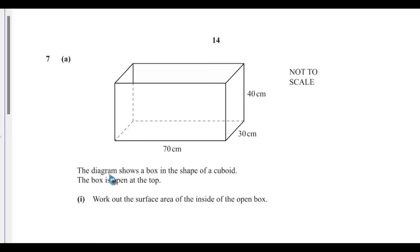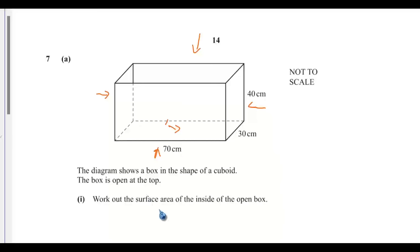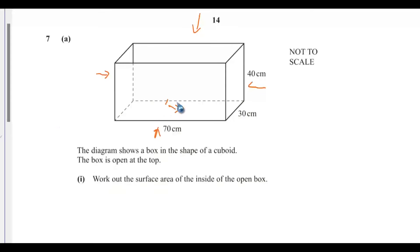On question 7, the diagram shows a box in the shape of a cuboid. The box is open at the top, so that means we have 5 sides: this side, this side, the back, the front, and the base. The top is open. So, work out the surface area of the inside of the open box — that will be the area of these 5 faces added together.